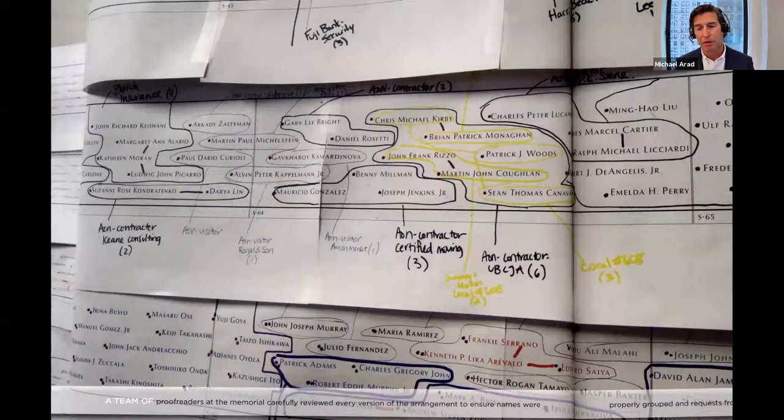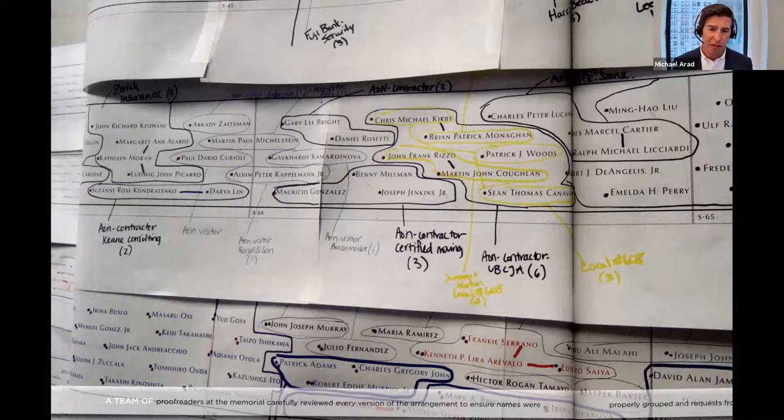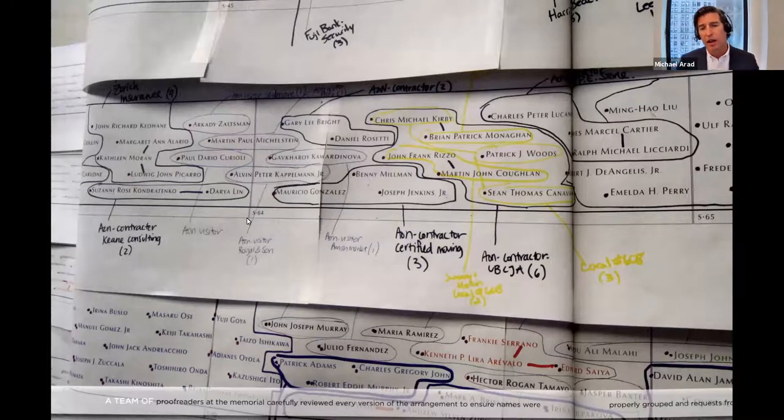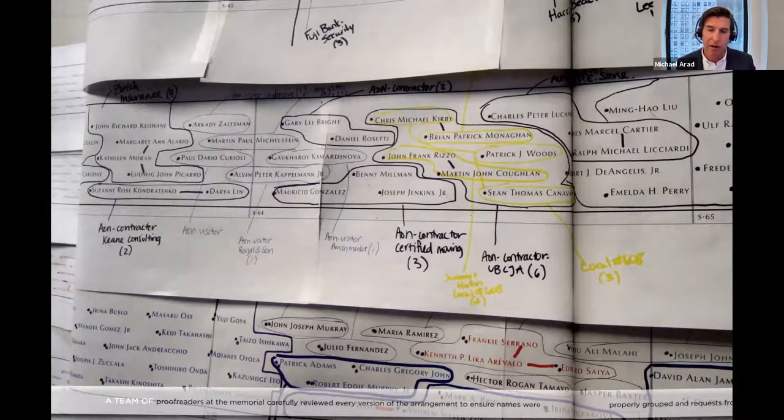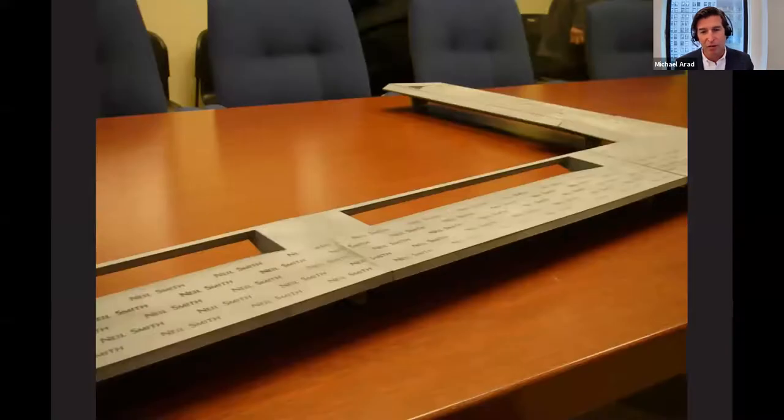And the Memorial Foundation has worked with a group called StoryCorps. They record oral histories. And some of those histories, you can listen to them when you visit the memorial. So each panel of names has a number associated with it. Here you can see on the screen, for example, S64, South pool panel 64. And as a visitor, you can come and listen to a story told by a friend or a relative about a name that you're seeing there on the memorial. So in addition to trying to meet all of the adjacency requests, we also had to make sure that graphically, there was a consistency to the way the names wrapped around the pool that we didn't have any unintentional gaps. And so there's quite a lot of work to it.